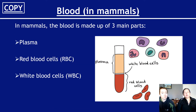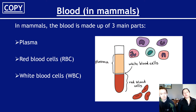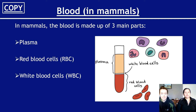Now, what blood is made up of - here are your three components. Part number one: plasma. Part number two: red blood cells. Part number three: white blood cells. There is other stuff in blood, but for National 5, these are just the three things that you need to know.